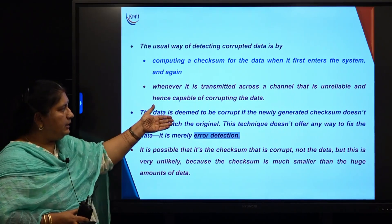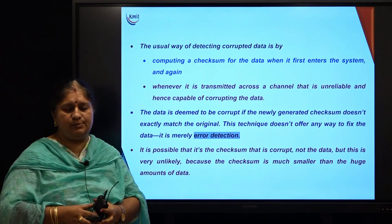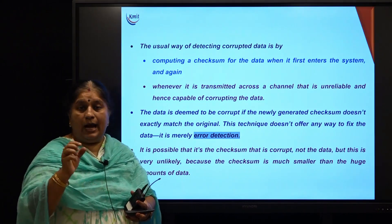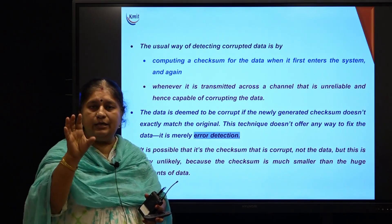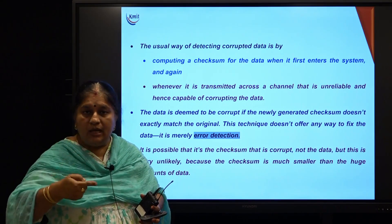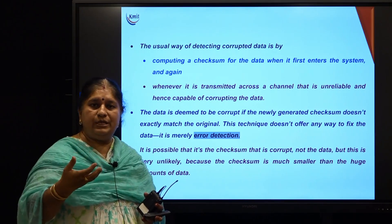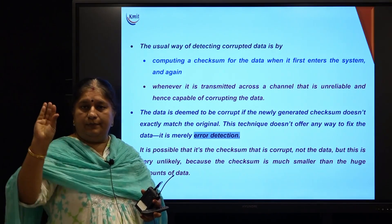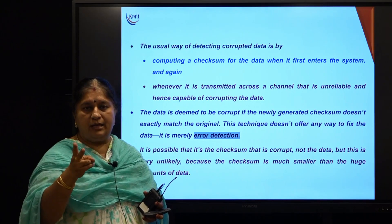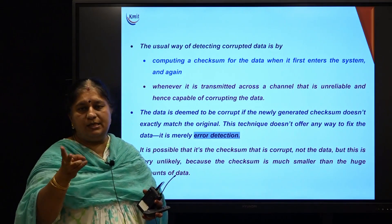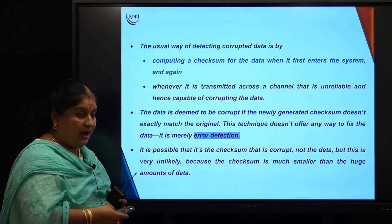The data is deemed correct if the newly generated checksum matches the already existing checksum. The first time we write a file into the system, default primitives automatically calculate and store the checksum. Subsequent read operations also calculate the checksum and compare it with the existing one. If both are matching, the data is correct. If there is a mismatch, we detect that something happened to the data and the data is not correct.